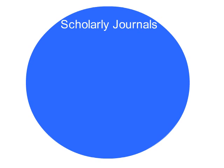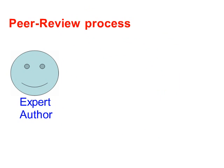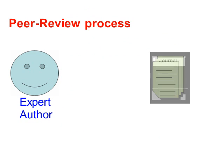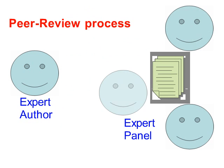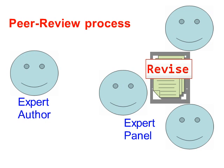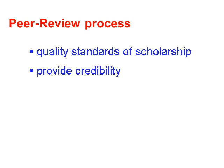Most, but not all, scholarly journals are peer-reviewed. Peer-reviewed journals are also known as refereed journals. Peer-review is an editorial process by which books or articles written by experts are reviewed by a panel of peers or other experts in the same subject area. The expert panel may decide to reject the article or send it back to the author for revisions until it's finally ready to be published. This peer-review process helps to ensure the articles being published adhere to quality standards of scholarship and provide credibility.